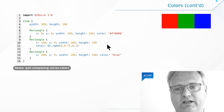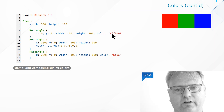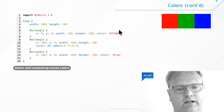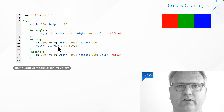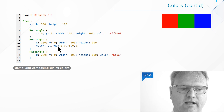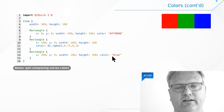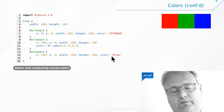Here's an example: I specified red using the hash notation, green with Qt.rgba(), and blue using the SVG name 'blue'. Yep, that's it.